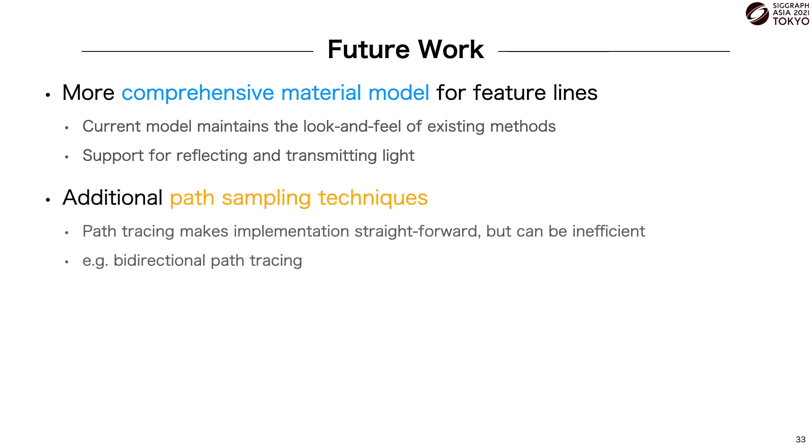Using path tracing as the underlying path sampler makes the implementation straightforward, but it can be inefficient for scenes with complex lighting and occlusion. Adding support for additional path sampling techniques, like bidirectional path tracing, would help improve robustness.